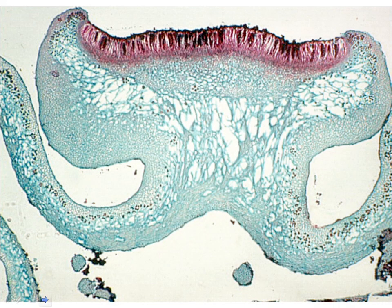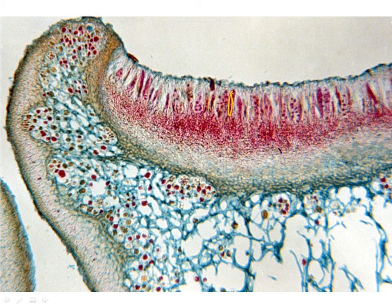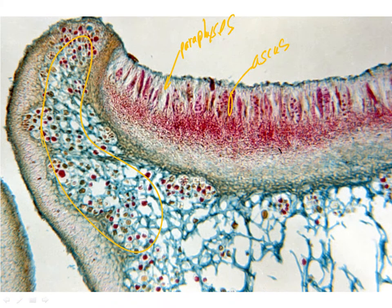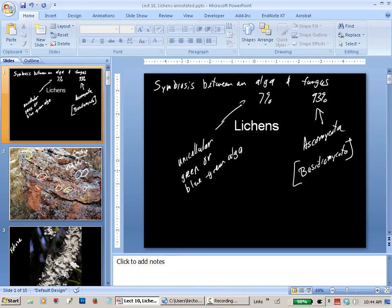Otherwise it's exactly the same. Here is a closer view of an apothecium, where you can find the different layers and see the algal cells. Closer still, we have the ascus — and if you look carefully, there would be paraphyses. Very nice elaborate algal layers here. So in lab, you can find out if you like these things as much as I do.